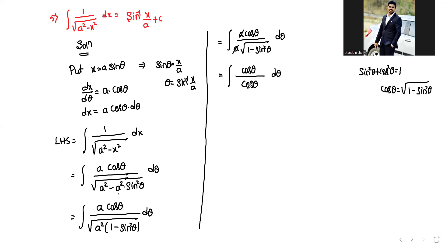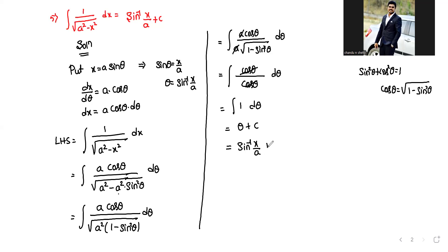The a cancels. Using the identity sin square theta plus cos square theta equals 1, we have cos theta equals square root of 1 minus sin square theta. So cos theta in numerator and denominator cancel, leaving integral 1 d theta, which gives theta plus c. Since theta equals sin inverse x by a, the answer is sin inverse x by a plus c, which equals RHS.